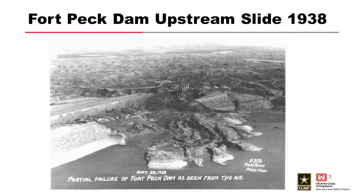Reclamation has also had a few instability issues, but one of the best examples of slope instability in the Corps portfolio is shown here for Pec Dam. This was a pretty massive slope instability that occurred back in 1938. The size of this slide is about a quarter section — that's 160 acres.